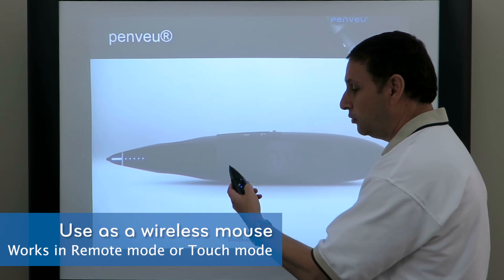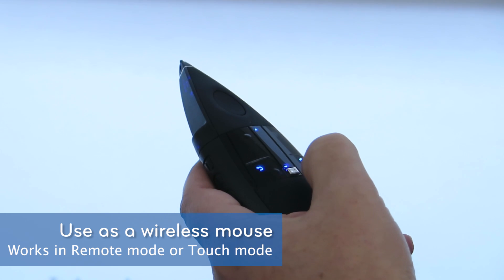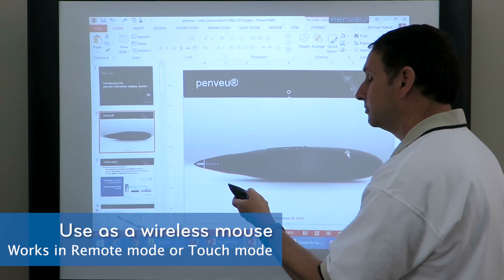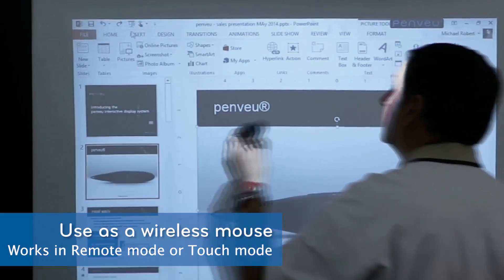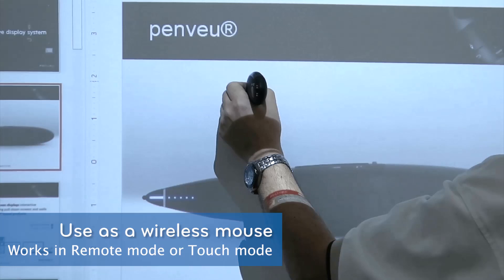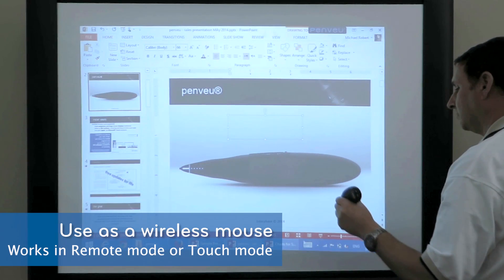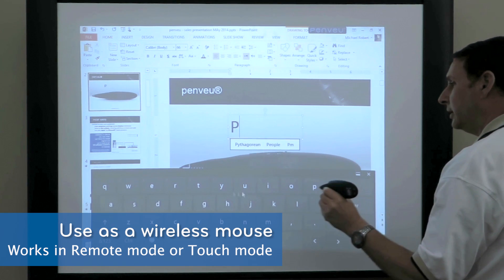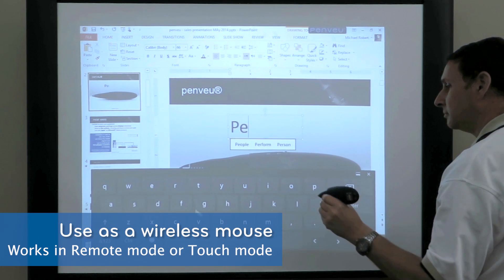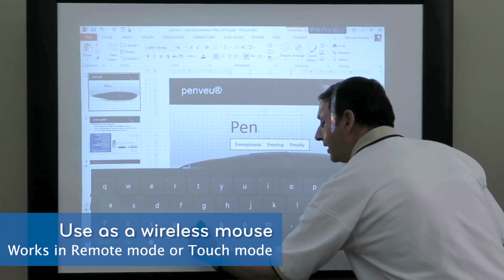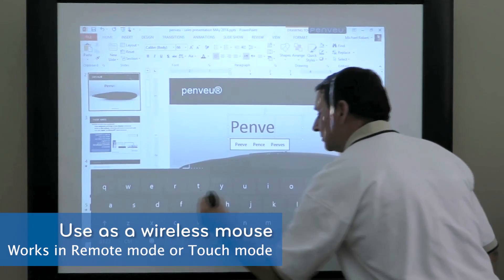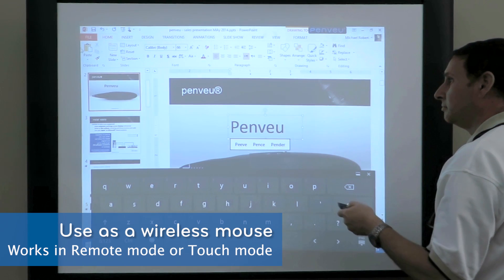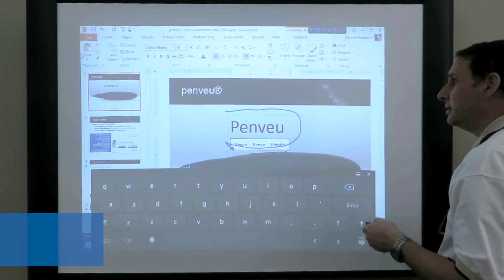PenVue also works as a mouse. With one button, we switch to mouse mode. Right click. We can work remotely. And we can work at the board. Let's get the on-screen keyboard and write remotely. And then actually touch it. Back to pen. Let's highlight what we just did.